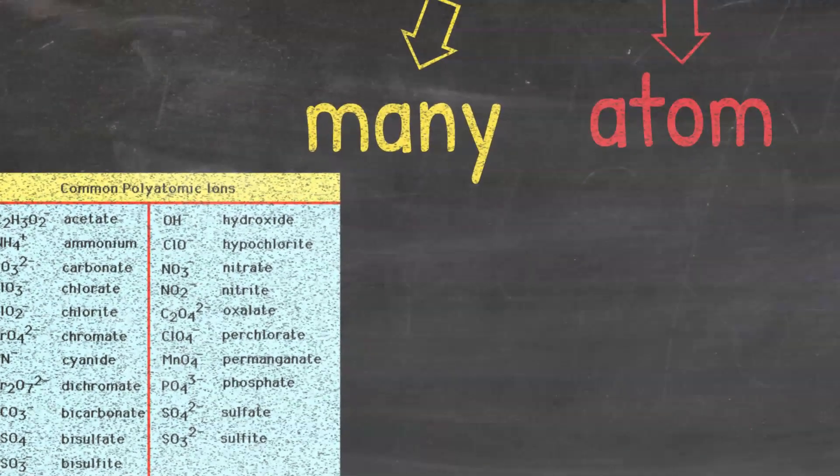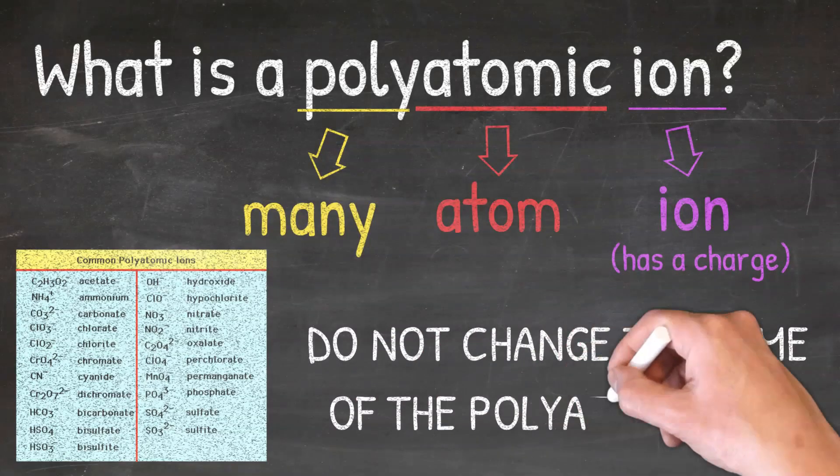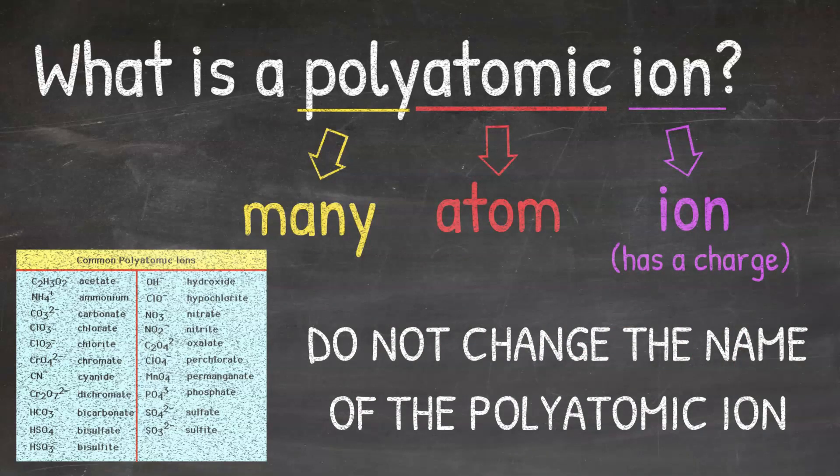Whenever we have a polyatomic ion present, we are not going to change the name at all. The name of the polyatomic ion will stay just as it is when we name ionic compounds.